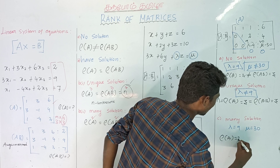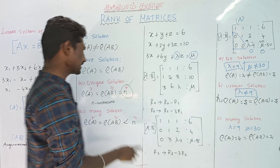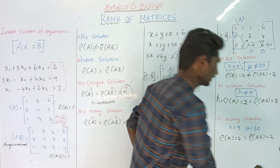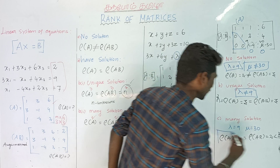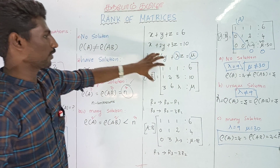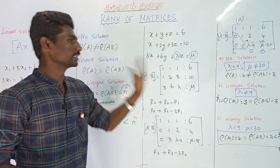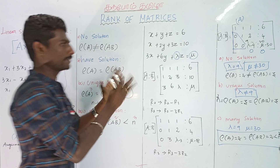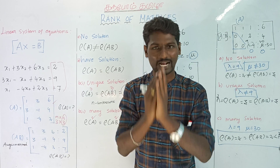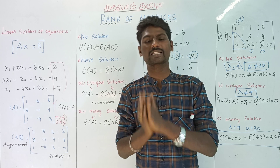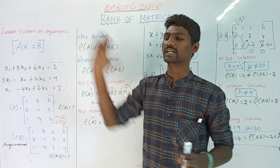So rank of A matrix is 2 and rank of AB matrix is 2. You can solve this. This is easy to solve using the matrix method. You can compare the matrices and navigate the problem. This seems easy to solve all the topics if you use the matrix approach to compare and solve the problem.